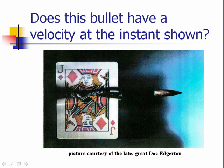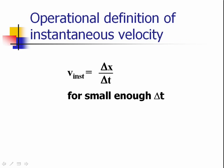Now, let's explore the operational definition of that instantaneous velocity. It looks exactly like the operational definition of average velocity, except the caveat now is that delta t has to be small.